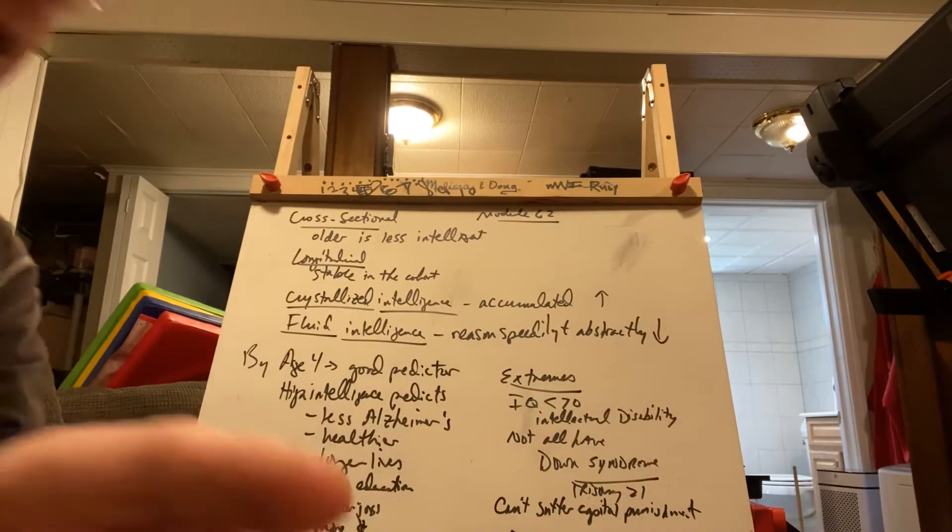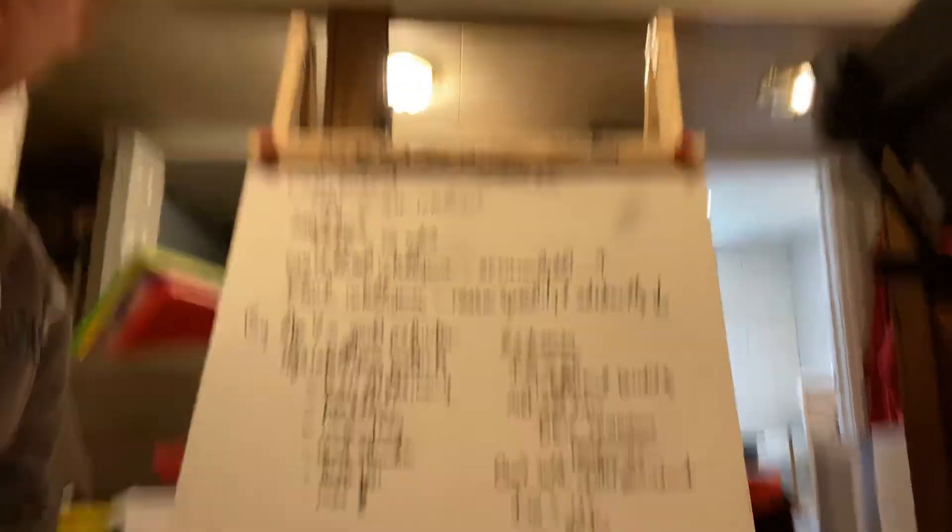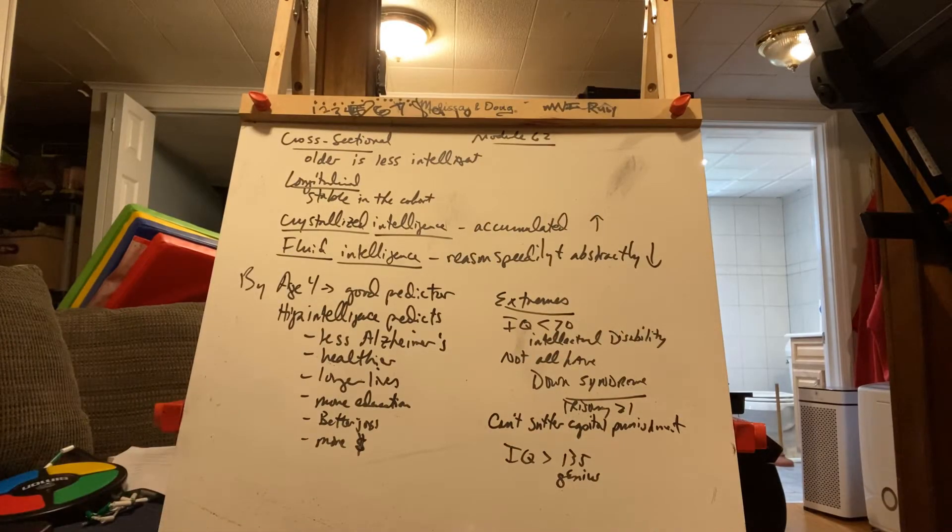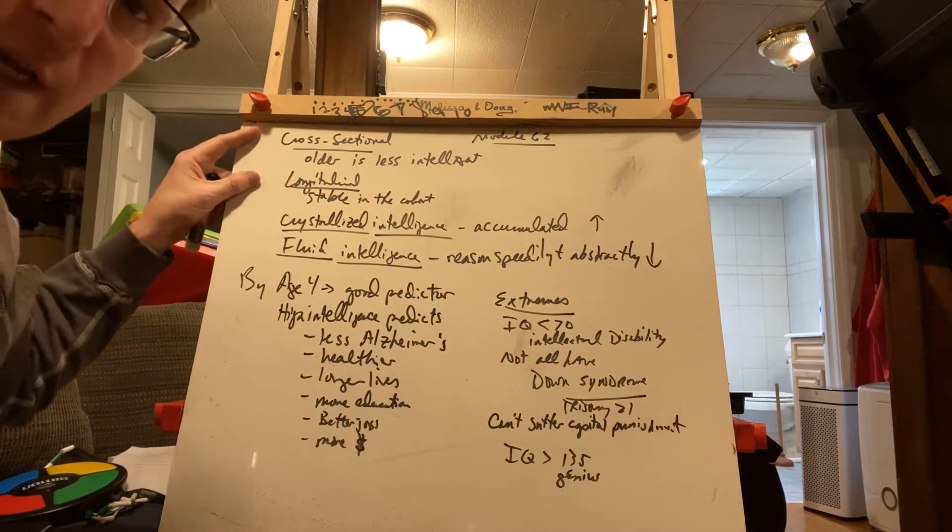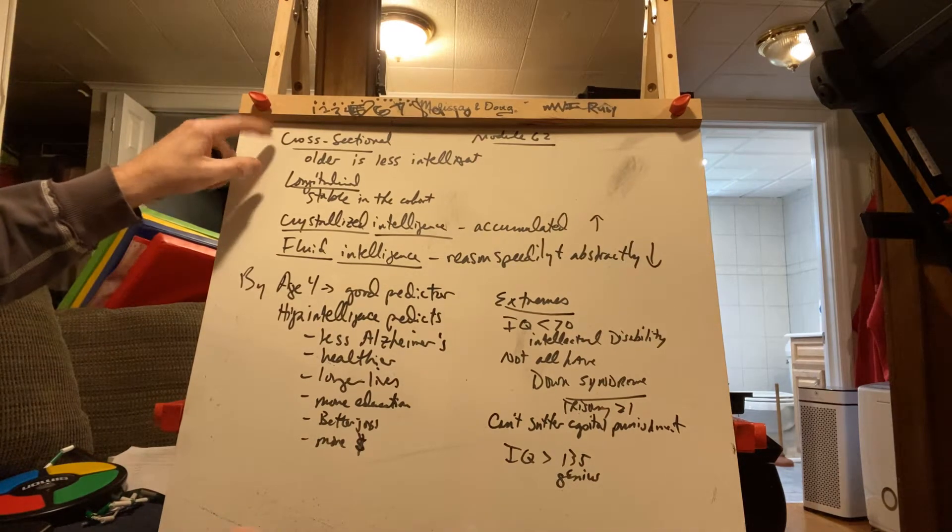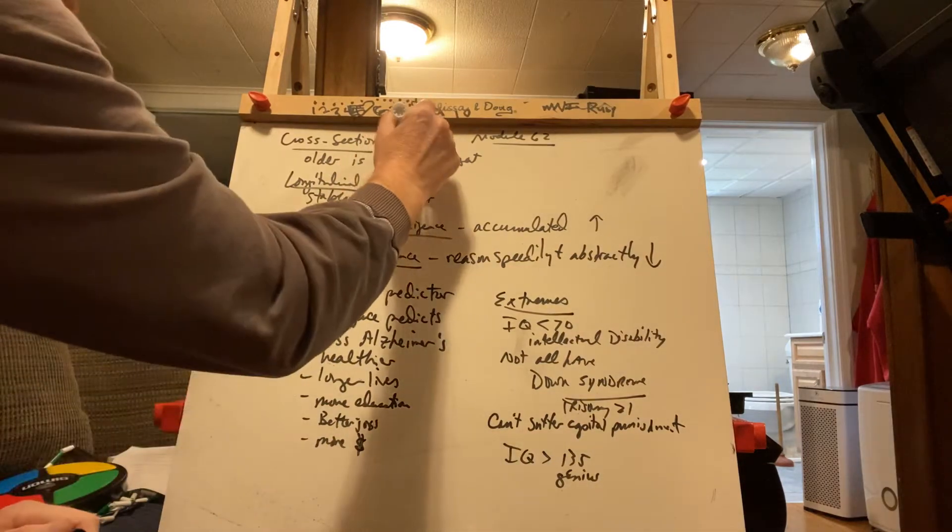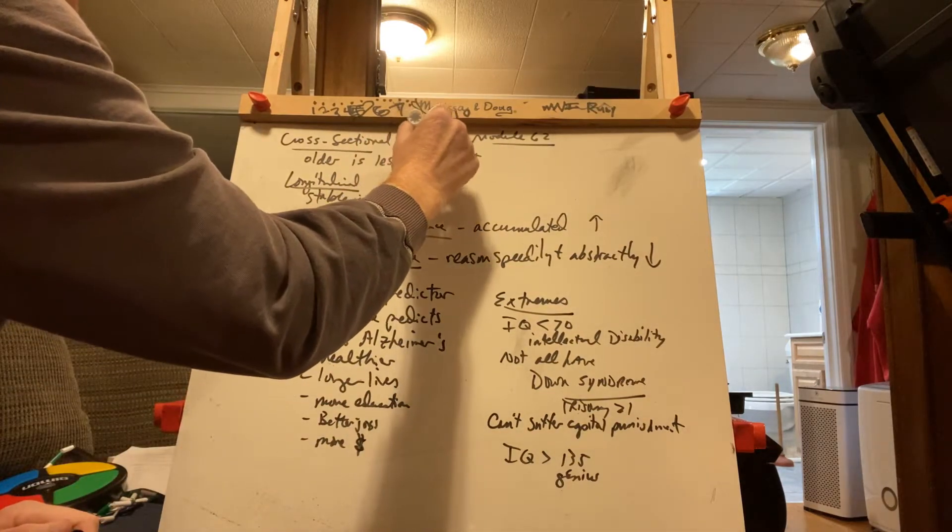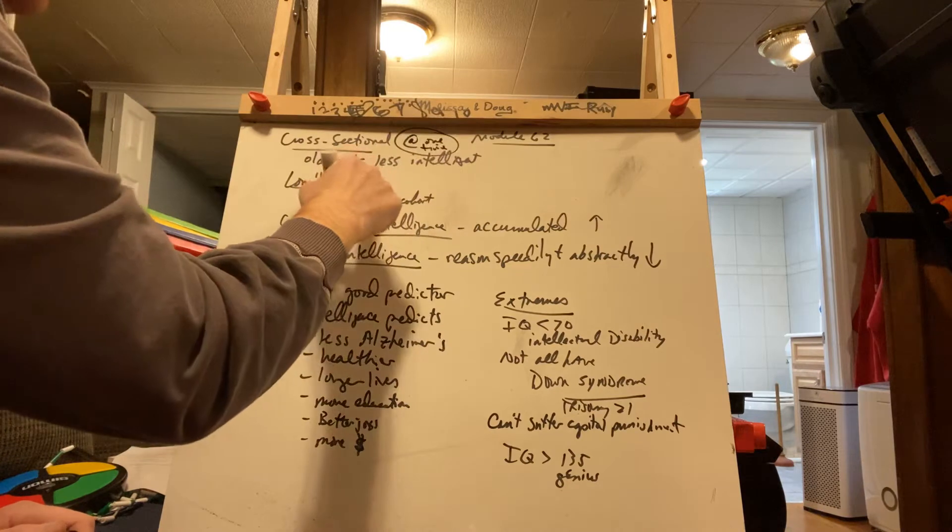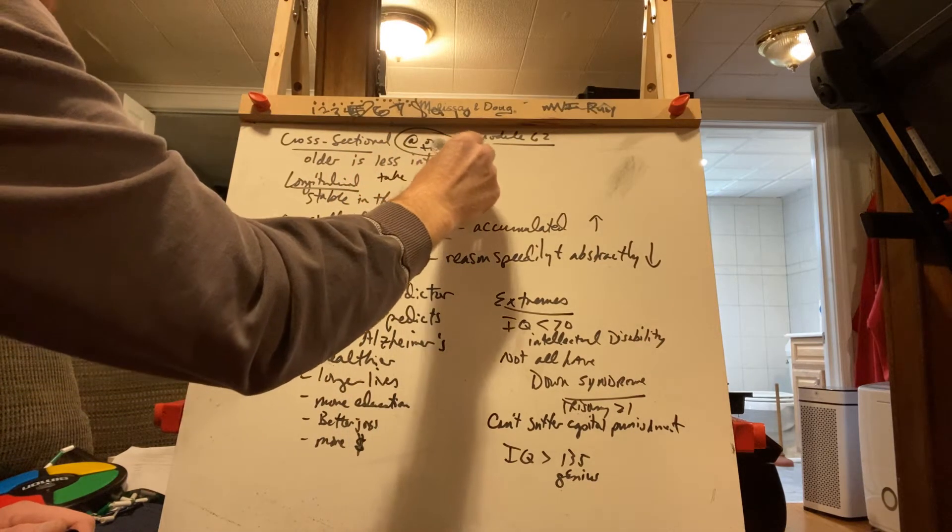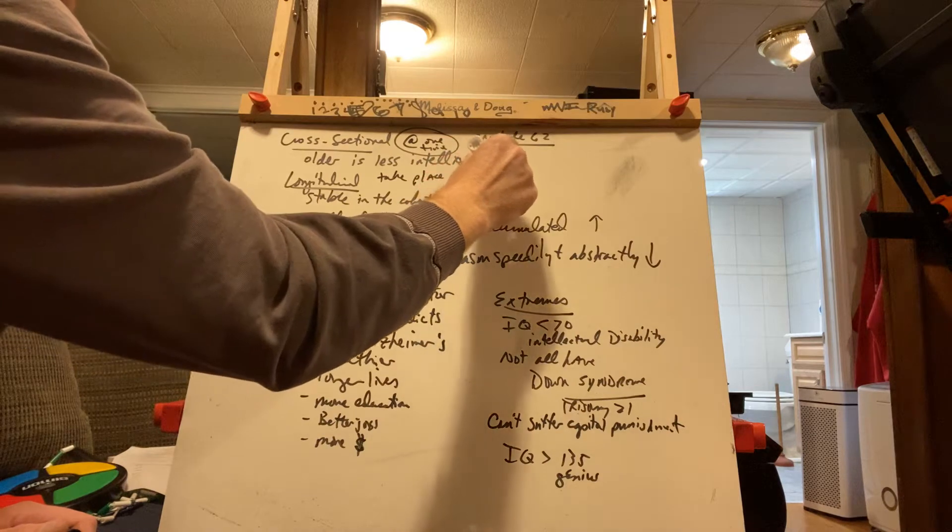Today's notes are on module 62. They've done studies on intelligence - cross-sectional studies and longitudinal studies. Remember, cross-sectional is at one time, whereas longitudinal studies take place over many months or years.